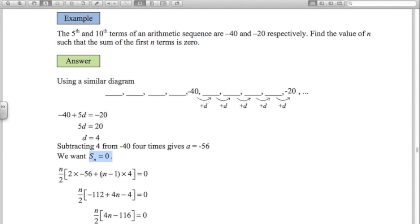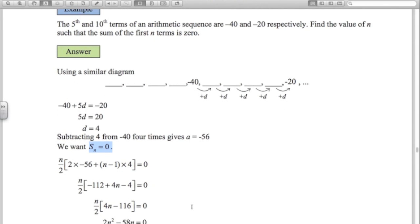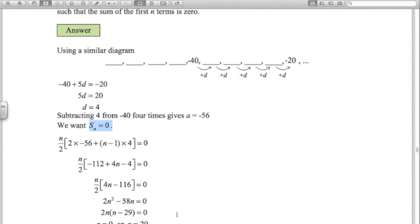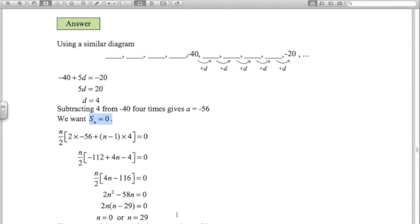Expand the brackets carefully inside here. 4 times N minus 1 times 4, 2 times negative 56. Collect the like terms in there and we end up with this. Quadratic equation. So factorise here. There's a common factor of 2N. So N is 0 or 29.